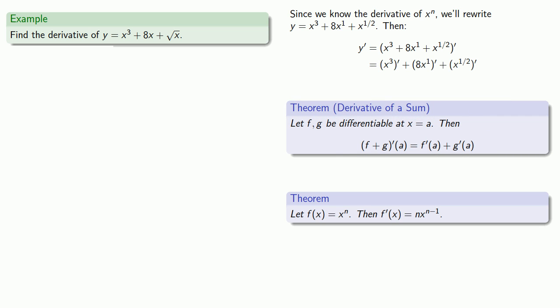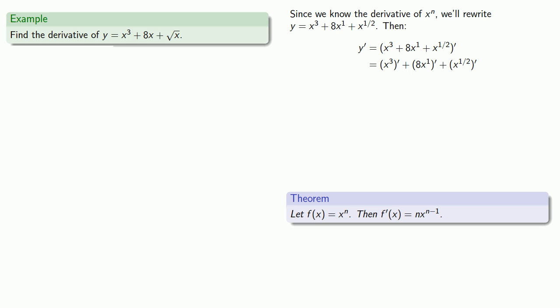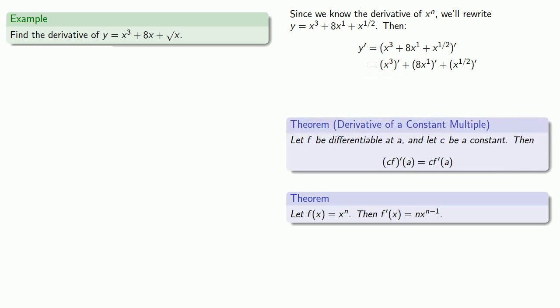Now, we know the derivative of x to the third and x to the power 1 half. But what about this derivative of 8 times x to the first? Well, again, the last thing we do here is we multiply by 8, which is a constant. And so, this is a derivative of a constant times a function. So, what do we do with that? We have this result that the derivative of a constant times a function is the constant times the derivative of the function. So, we can move that multiplier of 8 outside of the differentiation.